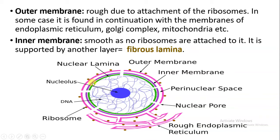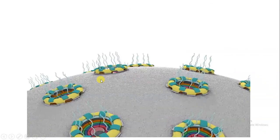The inner membrane is smooth because it doesn't have any kind of ribosomes attached on the surface. The inner membrane is always supported by another layer that is the fibrous lamina. Here the green layer you can observe is called as fibrous lamina. So the inner membrane is always attached to and supported by the fibrous lamina.